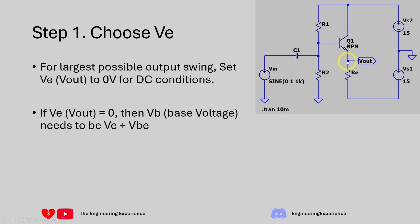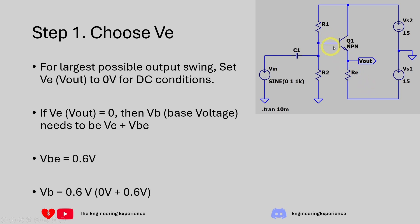If Vout is zero volts, then VB needs to be VE plus the VBE voltage, which is typically 0.6 volts. So our base voltage needs to be equal to 0.6 volts. What we've done so far is set the emitter voltage to zero volts and the base voltage to 0.6 volts.